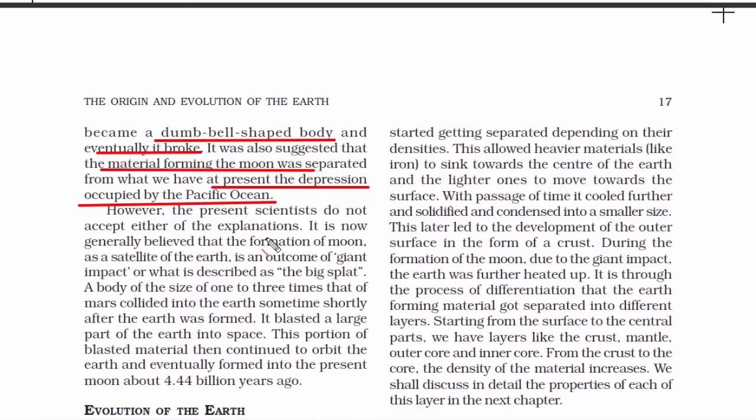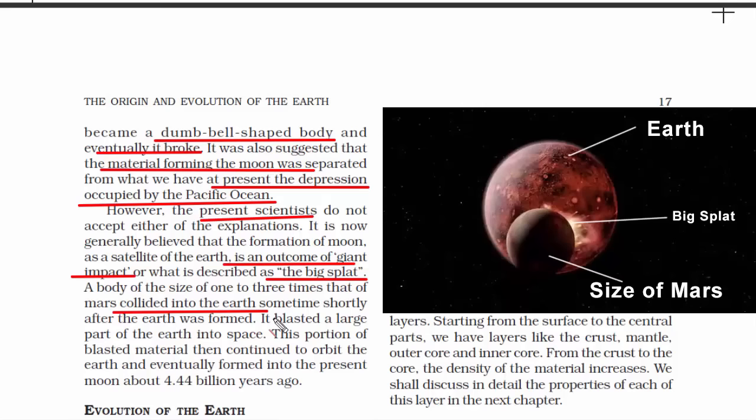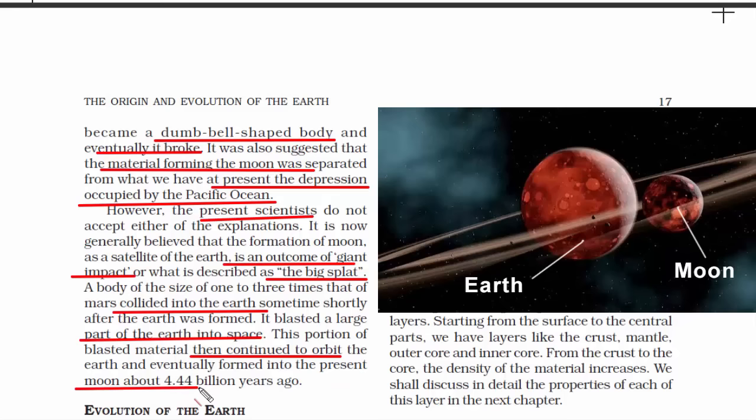Present scientists do not accept Darwin's theory. What we now believe is that the formation of the Moon as a satellite of Earth is an outcome of a giant impact, also called the Big Splat — meaning a big splash. An object the size of Mars collided into the Earth shortly after Earth was formed. The debris from this collision continued to orbit around the Earth, and due to gravitational attraction and further collision, these small particles eventually formed into the present Moon. This theory is now widely accepted.